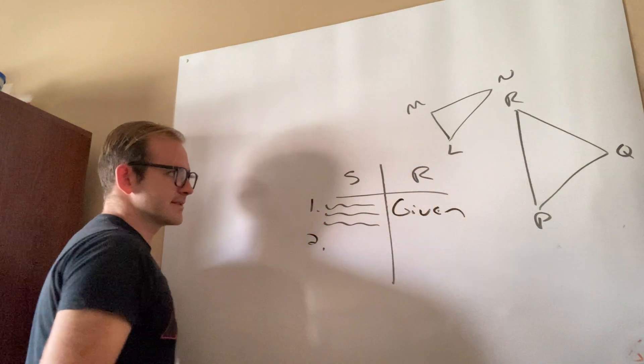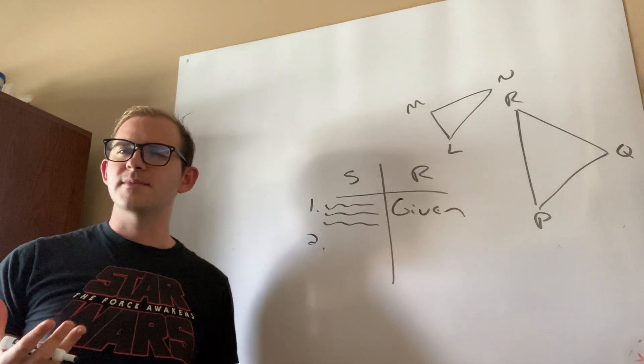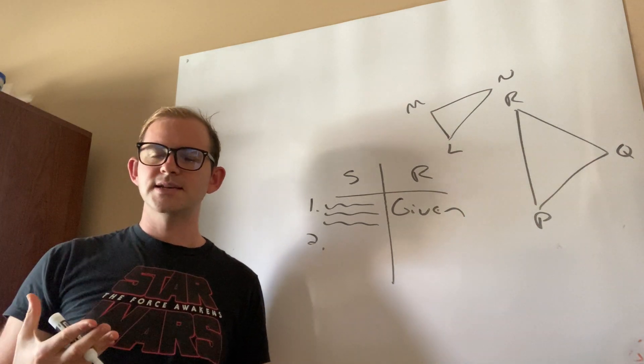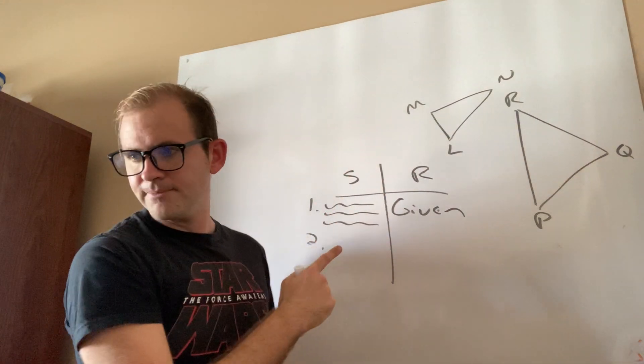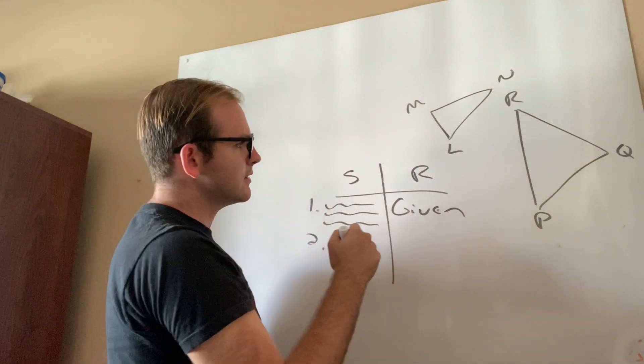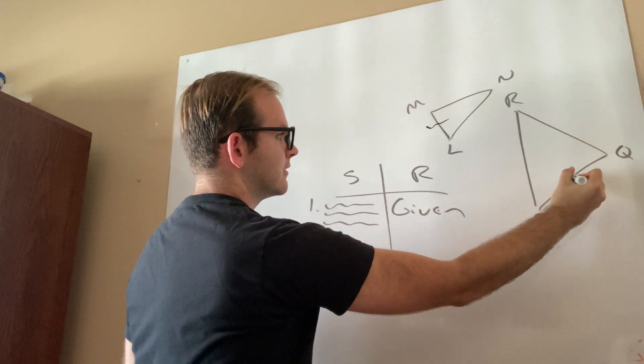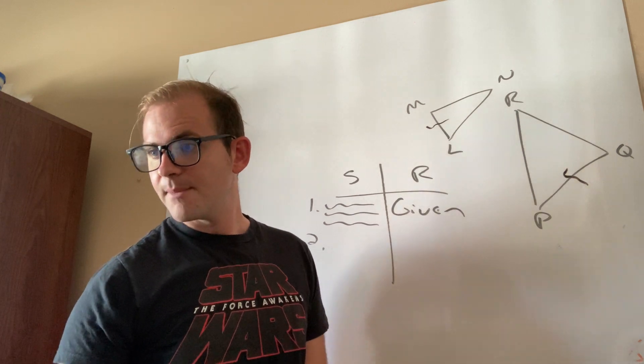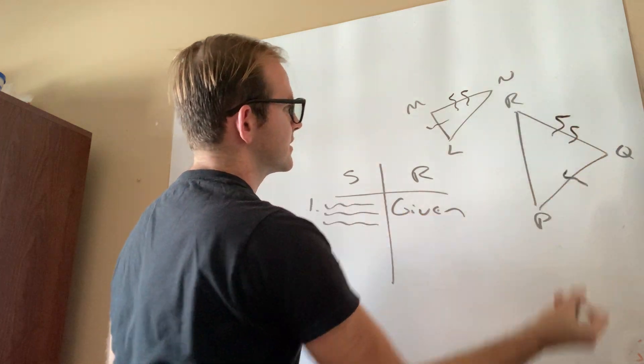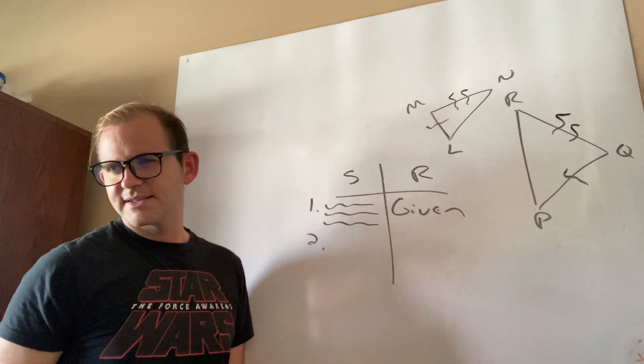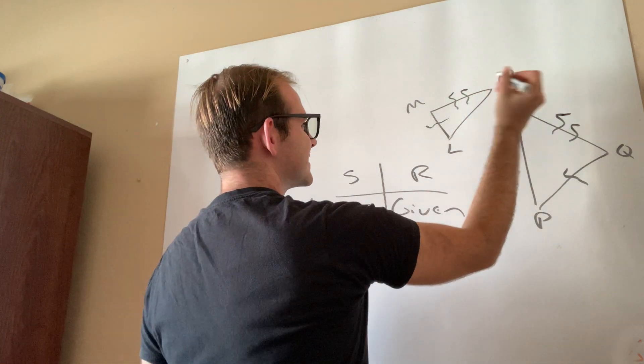Now, let me ask you this. They gave us those three fractions, right? They gave us those three statements of this over this equals this over this equals this over this. Here's what they're actually saying, guys. They're actually saying that LN and PQ are proportional. So what I'm going to do is I'm going to put a single squiggle on each of those. They tell me that MN is proportional to QR. So I'm going to put a double squiggle on each of those. And then they tell me LN is proportional to PR. So I'm going to put three squiggles, right? One, two, three. One, two, three.